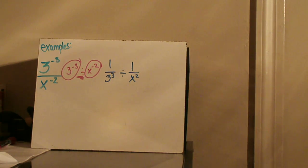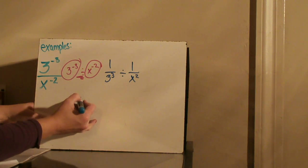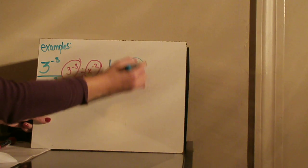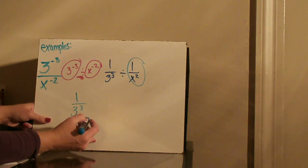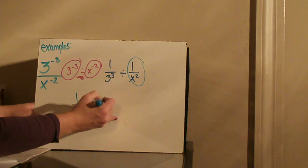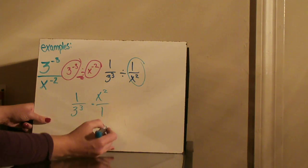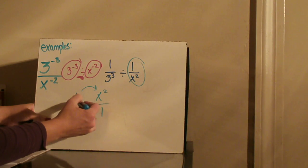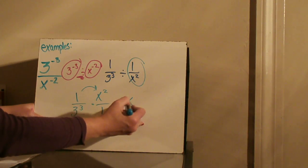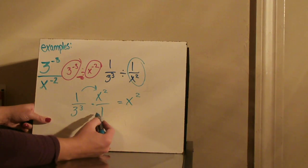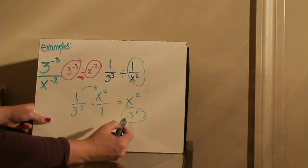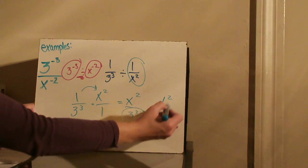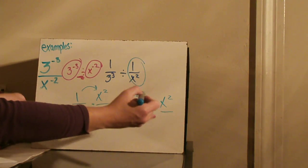Now I have two fractions being divided, so I follow the rules for dividing fractions: multiply and flip the second fraction. So I have 1 over 3 cubed times x squared over 1. Multiplying: 1 times x squared is x squared, and 3 cubed times 1 is 3 cubed. Simplifying 3 cubed gives 27, so the final answer is x squared over 27.